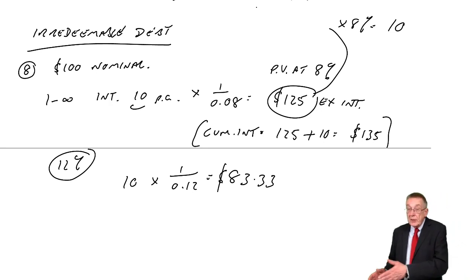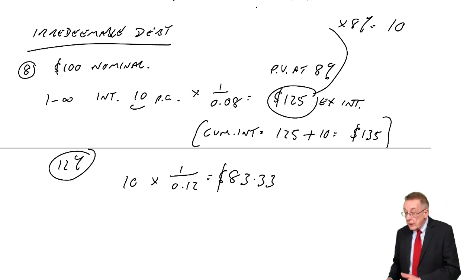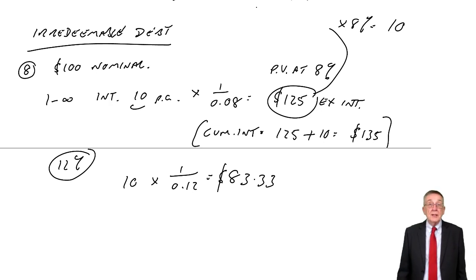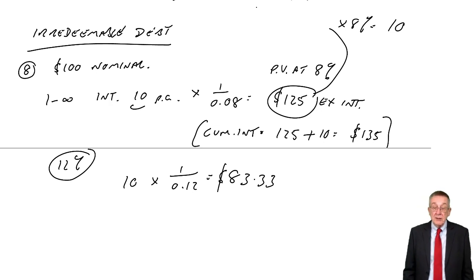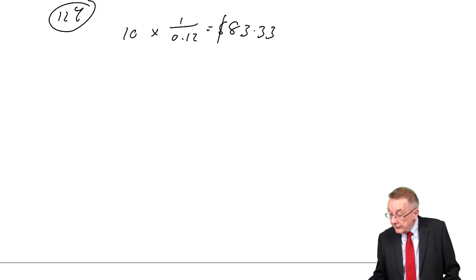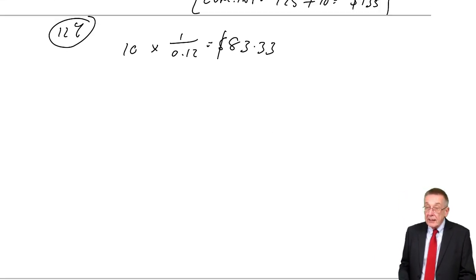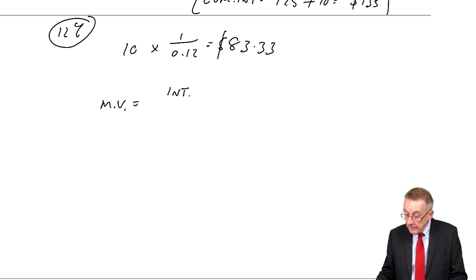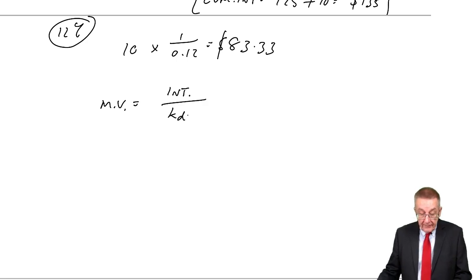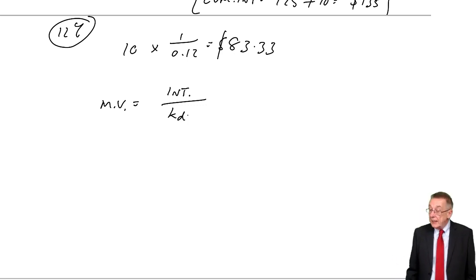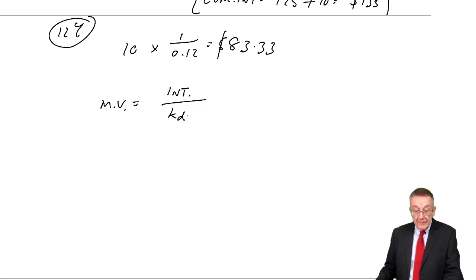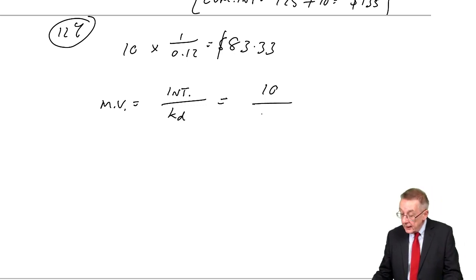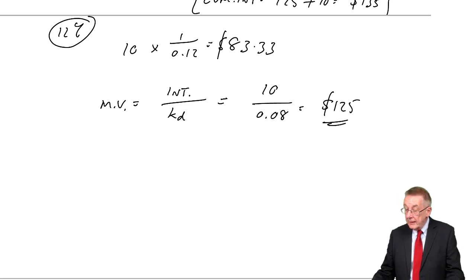If you get 12% from the bank, you're only prepared to pay $83 for these debentures, because the return of $10 a year would be a 12% return on your investment. You can learn this as a formula: market value equals the interest (coupon rate) divided by KD, where KD is the investor's required rate of return. Back to the original: coupon rate $10, KD = 0.08, market value = $125.